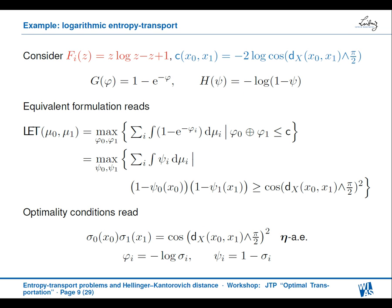In the key example with Boltzmann entropy and the strange cost function, the function g is given by 1 − e^{−φ} and h is given by −log(1 − ψ). The optimality conditions simplify to nice identities: the product of the densities equals the truncated cosine squared, and the optimal potentials are given by minus the logarithm of σ respectively ψ = 1 − σ. This is very helpful later when characterizing geodesic curves.